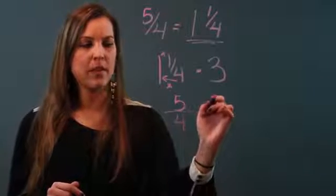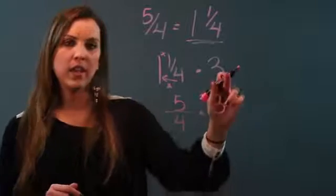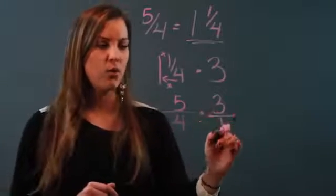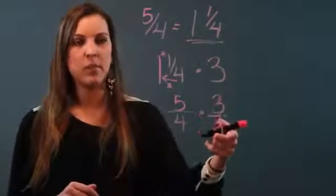All right, and I'm multiplying that by the number 3. Now 3 can be rewritten as 3 over 1, right, because 3 divided by 1 is still 3.